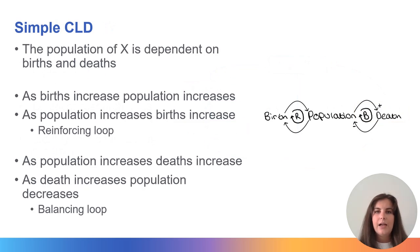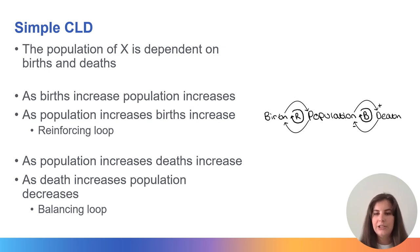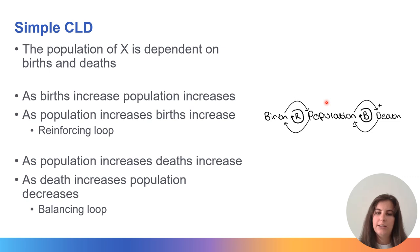Causal loop diagrams can be as simple or complex as you wish. In this causal loop diagram, you can see how population of X is dependent on birth rate and death rate by two different feedback loops. As population increases, death increases, and as death rate increases, the population decreases — giving rise to a balancing loop. As birth rate increases, population increases and as population increases, births increase. The population should only stabilise when the birth rate and death rate are equal.